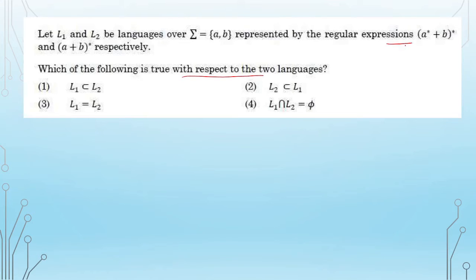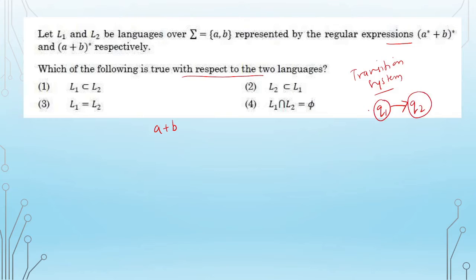When you have A+B in a regular expression, it means union — both A and B are accepted. When you write AB, it means concatenation. When you write A*, it means Kleene closure — the empty string, single A, double A, triple A, and so on are all included. Star is represented as a loop in the transition diagram. For example, if A+B is given with a star, the transition system will have a single state Q1 with a self-loop on inputs A and B, because the star means the pattern can repeat.